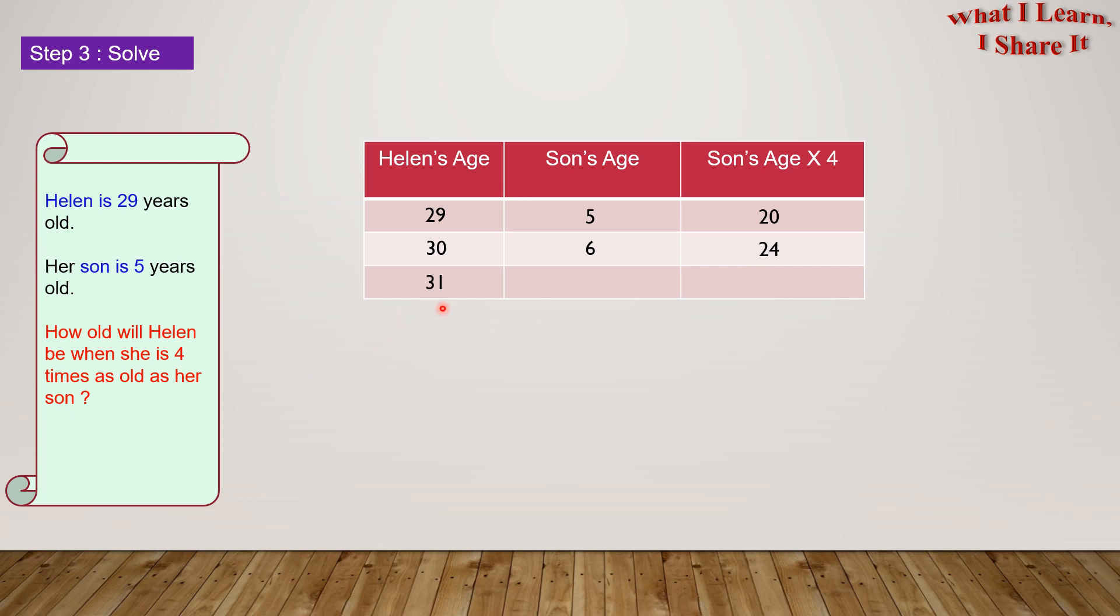After another one year, Helen would be 31 years old, and her son will be 7 years. So her son's age, times 4, equals 7 times 4, which is equal to 28.